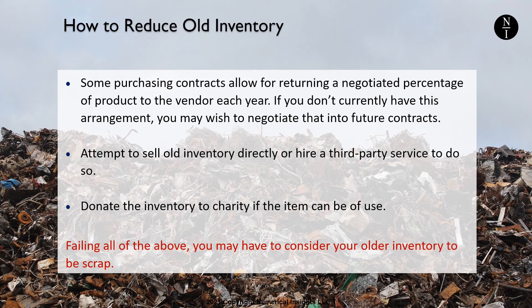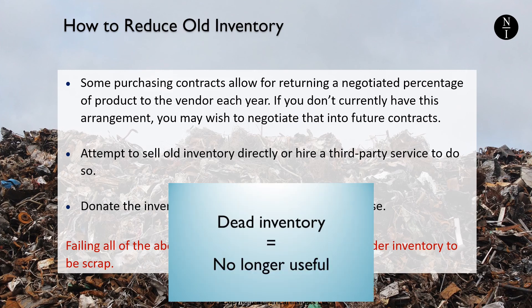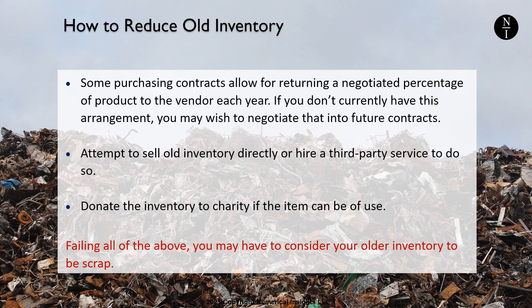Failing all of the above, you may have to consider your older inventory to be scrap and have your accountant write it off in the financial records. We have seen how to calculate inventory age for each item carried and how it can enhance your knowledge of the true state of inventory. In most cases, you can consider inventory dead if it's been on your shelf for more than one year. If it's that old and the inventory turn metric shows it's slow moving, it may be time to invoke some of the actions just mentioned.